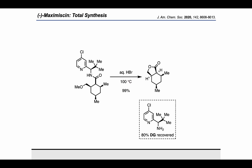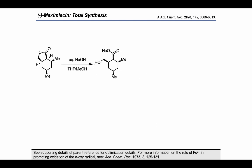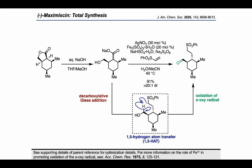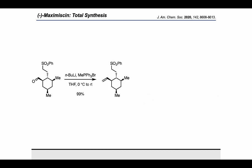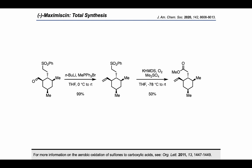Moving on, they removed the directing group by treating with HBr, which resulted in formation of a lactone. They were able to recover 80% of the directing group as the free base during this step. In order to execute a one-carbon homologation and fix the stereochemistry of the stereocenter alpha to the carbonyl, they hydrolyzed the lactone with sodium hydroxide and carried out a decarboxylative Giese addition followed by a 1,5-hydrogen atom transfer in a cascade that delivered the sulfone product. The radical generated by the Giese addition underwent a 1,5-HAT to give an alpha-oxy radical that was oxidized to an aldehyde, which fit right into the synthetic plan — the next step was a Wittig reaction to form the terminal alkene.